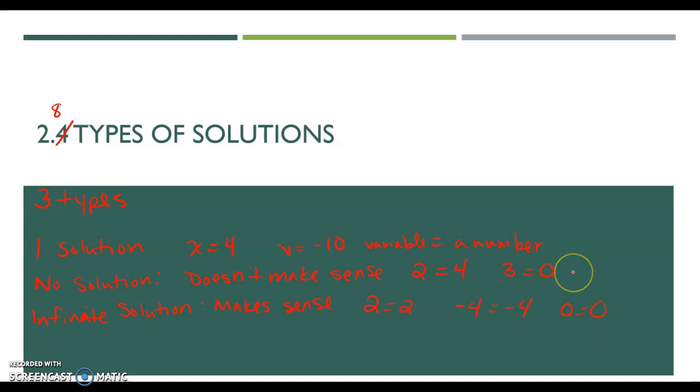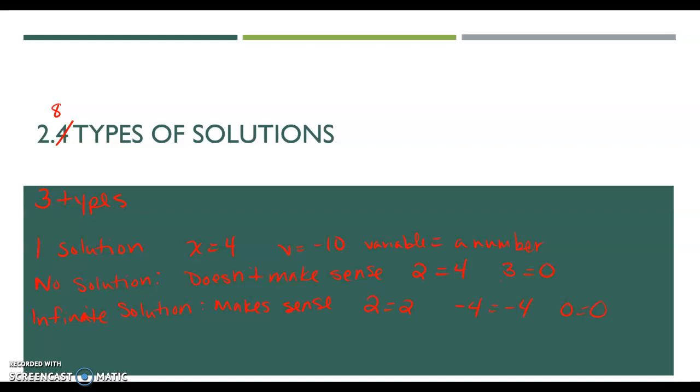But again, notice in all of these examples I give you, there are no variables. So basically what we're going with today is what happens and how do I decide how many solutions if my variables cancel each other out? Okay, so let's go to our first example.